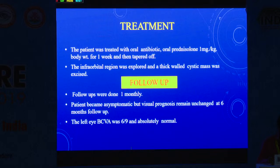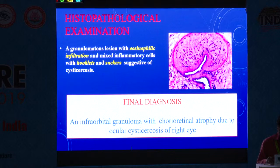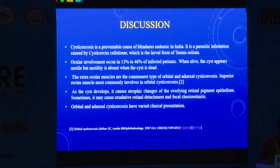The left eye BCVA was 6/9 and absolutely normal. Histopathological examination showed eosinophilic infiltration with hooklets and scolices, suggestive of cysticercosis. The final diagnosis was an infraorbital granuloma with chorioretinal atrophy due to oculocysticercosis.